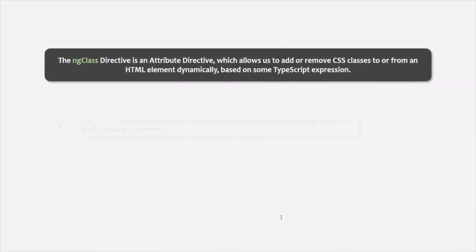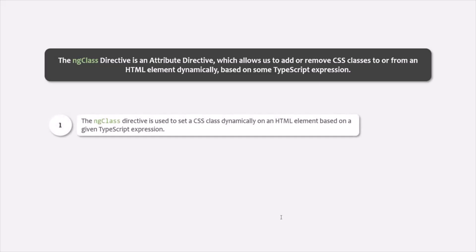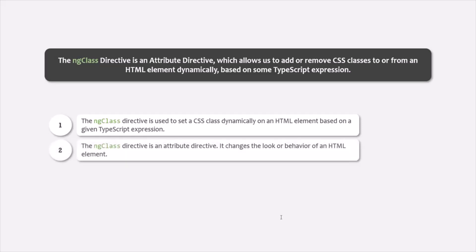In this lecture, we learned that the ng-class directive is used to set a CSS class dynamically on an HTML element based on a given TypeScript expression. The ng-class directive is an attribute directive — it simply changes the look or behavior of an HTML element; it does not manipulate the DOM by adding or removing elements. This is all from this lecture. If you have any questions, feel free to ask. Thank you for listening and have a great day.